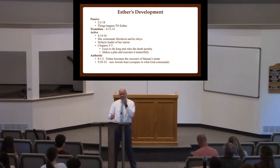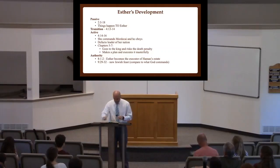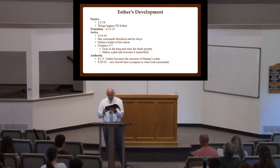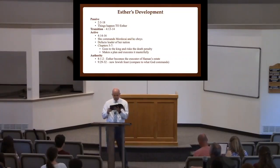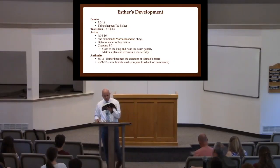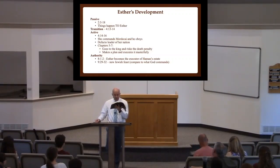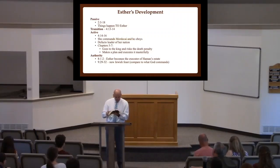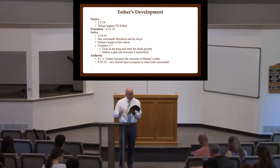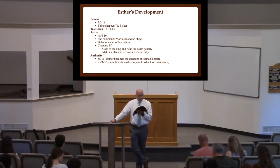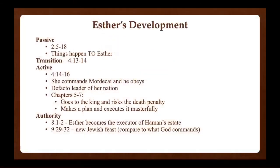Finally, at the end of the book, she is an authority figure. Chapter 8:1-2: 'King Ahasuerus gave to Queen Esther the house of Haman, the enemy of the Jews. And Mordecai came before the king, for Esther had told what he was to her. The king took off his signet ring, which he had taken from Haman, and gave it to Mordecai. And Esther set Mordecai over the house of Haman.' Then chapter 9:29-32: 'Queen Esther, the daughter of Abihail, and Mordecai the Jew, gave full written authority confirming the second letter about Purim. Letters were sent to all the Jews in the 127 provinces of the kingdom of Ahasuerus.' She says this is what we're going to do — we're going to have Purim — and it's according to her word and authority that this thing happens.